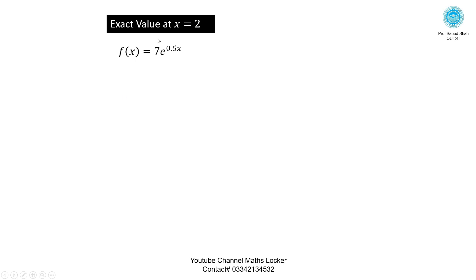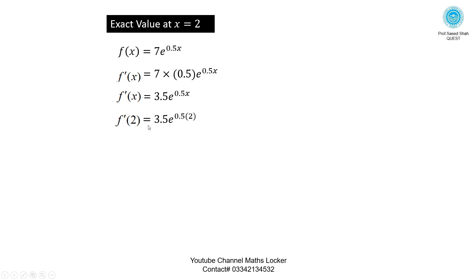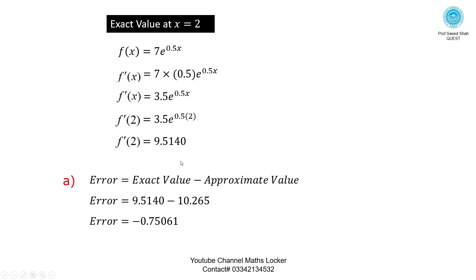For the exact value at x equal to 2, differentiate the function: f dash of x equal to 7 times 0.5 times e raised to the power 0.5x. Then put x equal to 2 and simplify. After simplification, f dash of 2 by exact formula equals 9.51400. Using the error formula — error equals exact value minus approximate value — substituting gives error equal to minus 0.75.